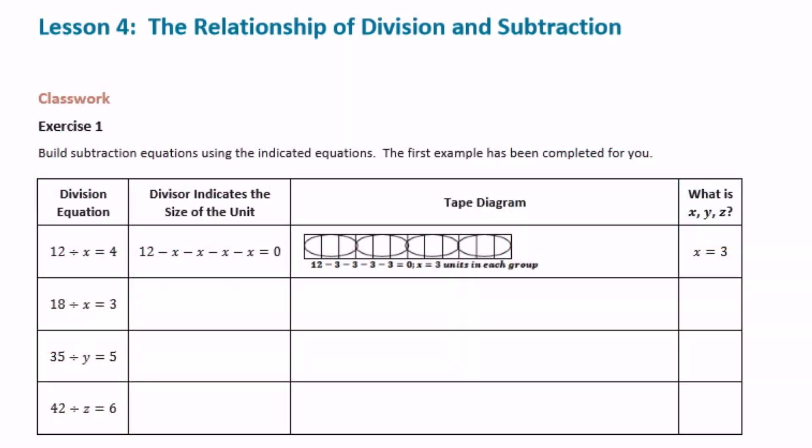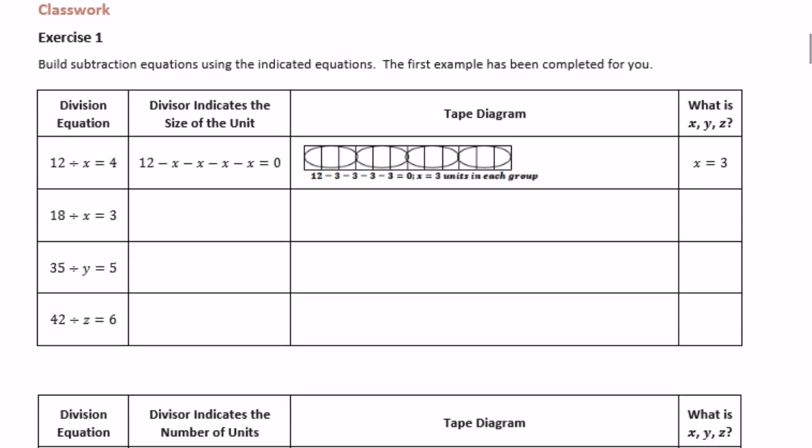6th grade module 4 lesson 4 classwork: build subtraction equations using the indicated equations. The first example has been completed for you. They gave us the division equation 12 divided by x equals 4, and we needed to turn that into a subtraction problem, draw a tape diagram for it, and then say what the variable is equal to.